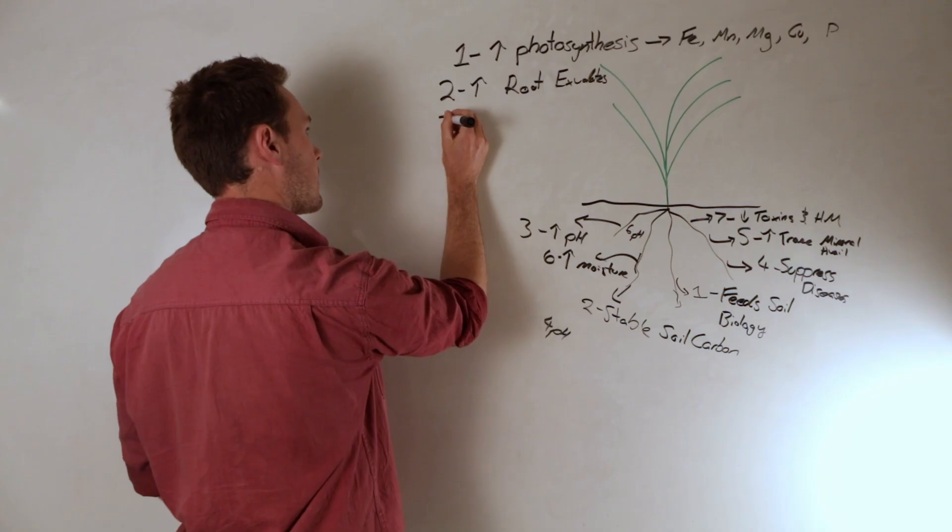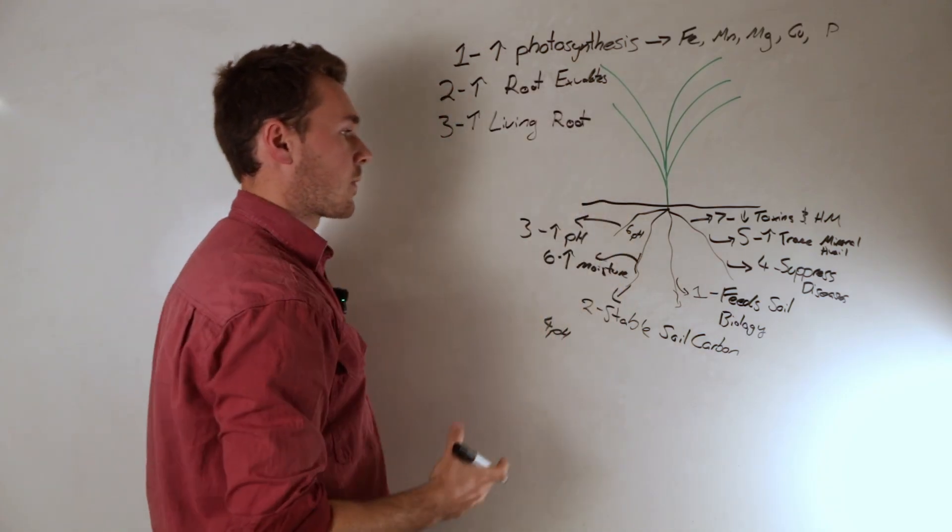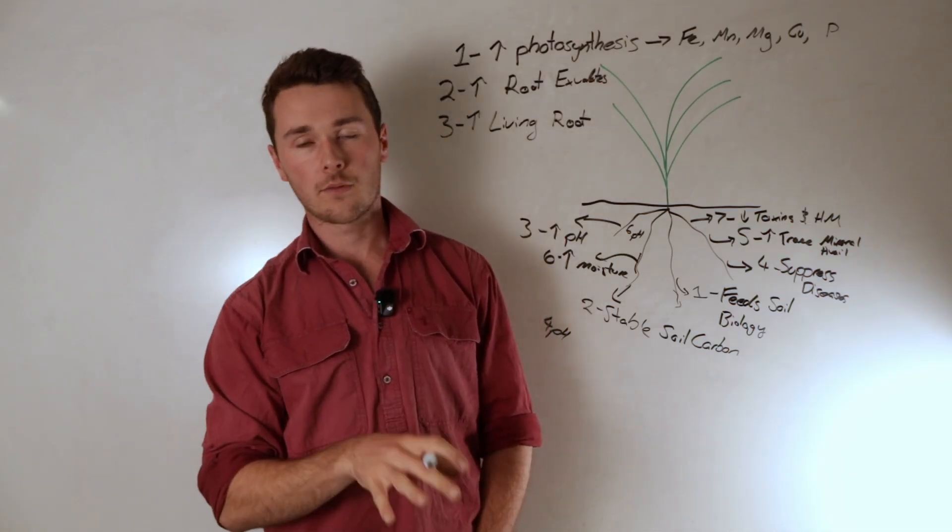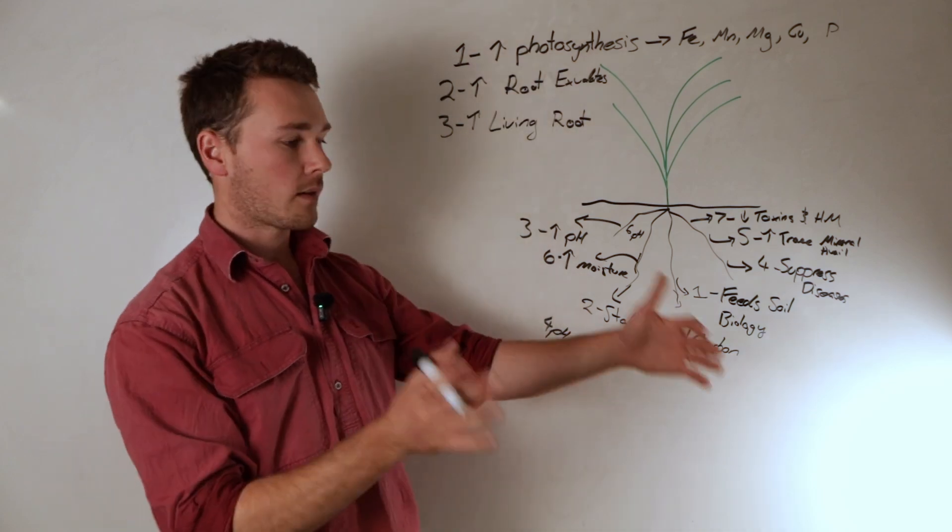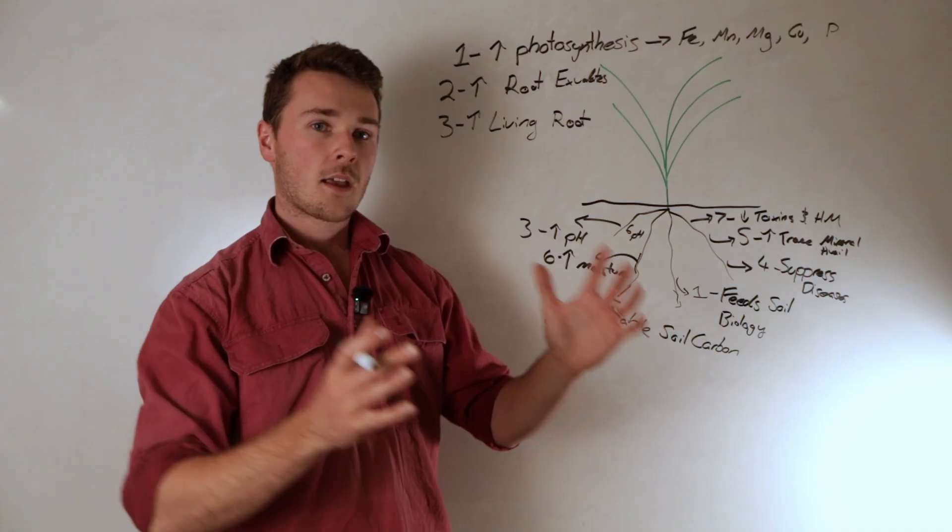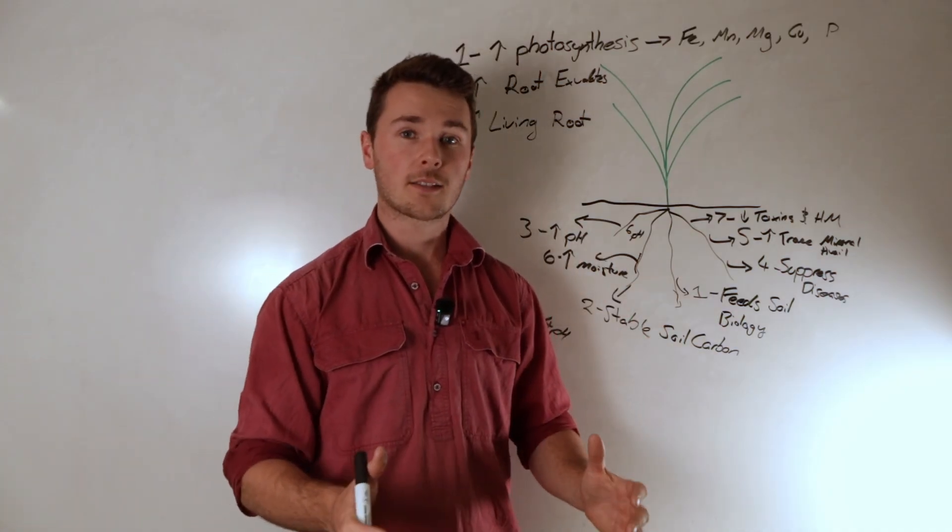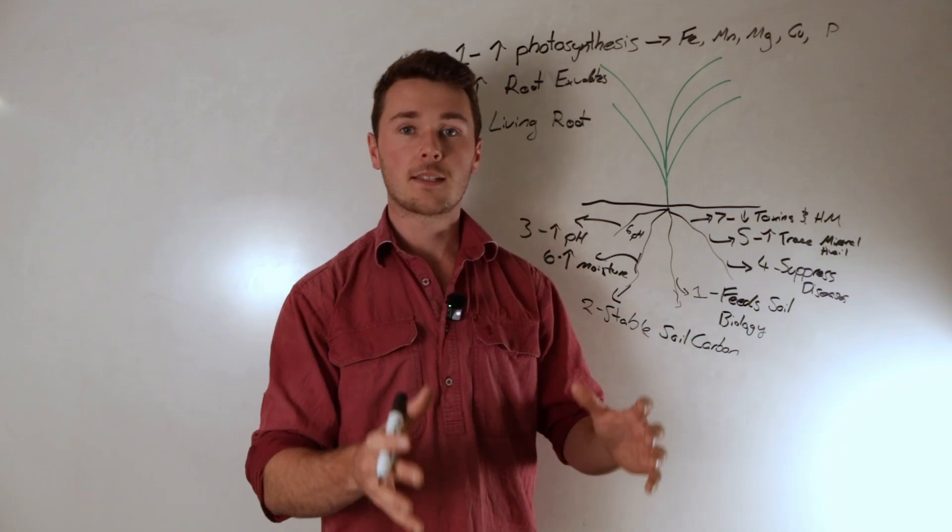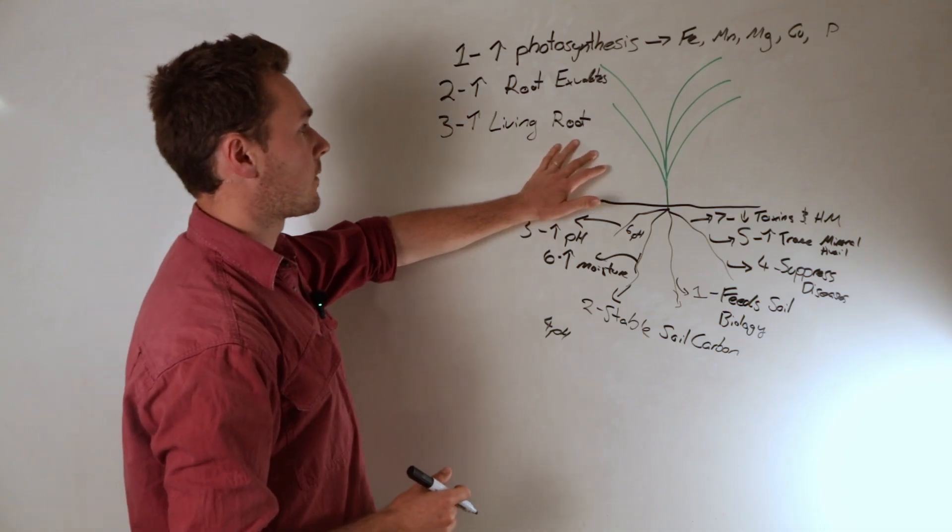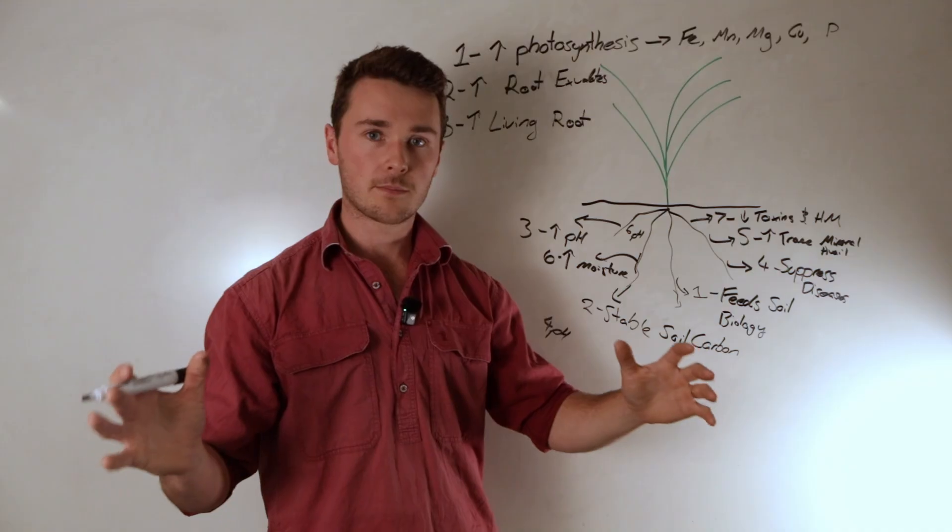And then finally we want to increase the amount of time there's a living root. This is important because we might only have a wheat plant in the ground for six months. Only four of those months is actually effective photosynthesis. The first month the plant's not really doing anything, it's in the seedling stage. The last month it's slowing down. So really there's only four or so months, probably less, of effective time the plant is photosynthesizing at its best ability. If we increase the amount of living roots in the ground then we can increase the amount of root exudates being put out.